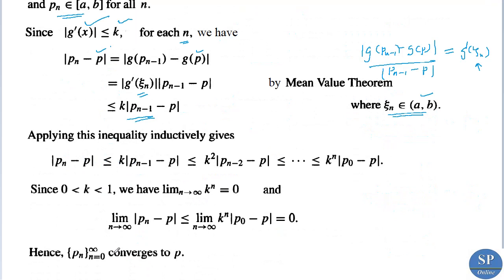Applying this inequality repeatedly: |p_n - p| ≤ k · |p_{n-1} - p| ≤ k² · |p_{n-2} - p| ≤ k³ · |p_{n-3} - p| ≤ … ≤ kⁿ · |p₀ - p|. That is, |p_n - p| ≤ kⁿ · |p₀ - p|.